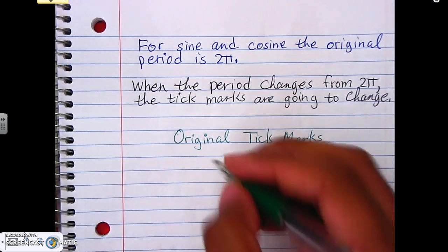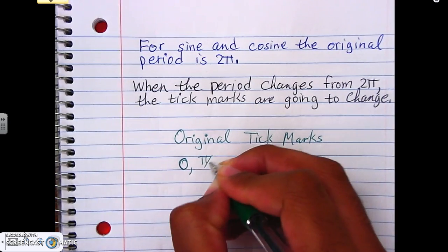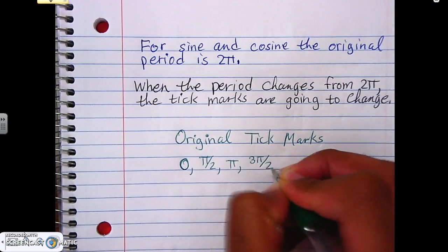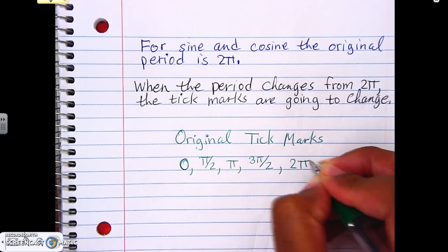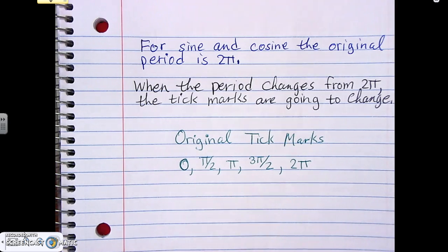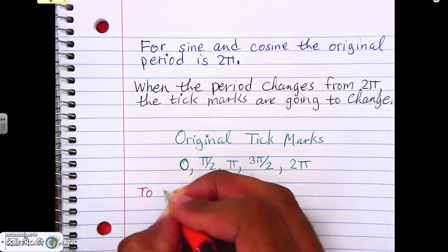These are the original tick marks. It starts off with 0, then π/2, π, 3π/2, and 2π. Those are all the original tick marks that we start off with. Now, we said that when our period changes, the tick marks change.